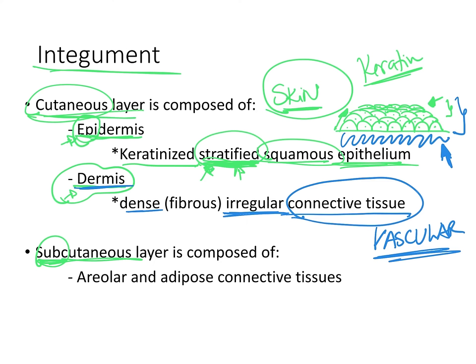When you go underneath the dermis, you are no longer in the cutaneous layer — you are in the subcutaneous layer. The subcutaneous layer is where you find fat, adipose tissue, which is another type of connective tissue. You also find areolar tissue there. Fat is important because it insulates us from losing heat to the external environment, and it cushions everything inside our body. In areas with more adipose tissue, you feel it very soft because of the fat underneath the skin.